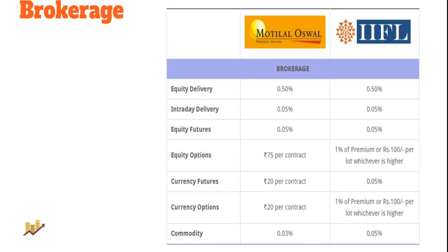Looking at brokerage, the rates are very similar. Equity delivery is charged at 0.5%, intraday at 0.05%, and futures at the same value with only minor differences across other segments. More or less, as far as brokerage is concerned, both brokers are on similar lines. However, if you increase your upfront initial deposit, Motilal Oswal is very minimally cheaper than IIFL. For a complete review, you can check the review pages of Motilal and IIFL on our digitalblogger.com — links are in the description.